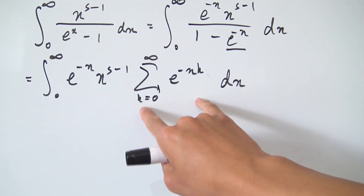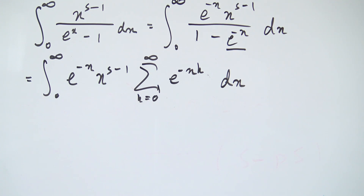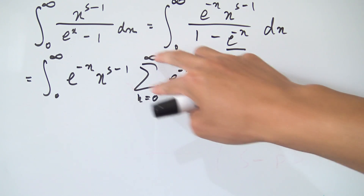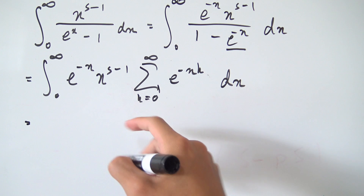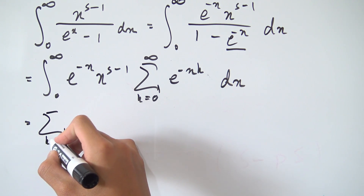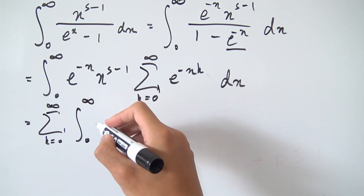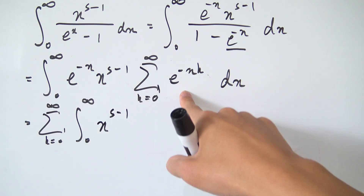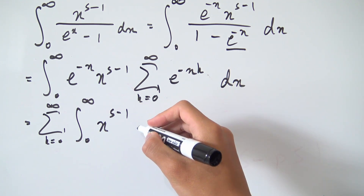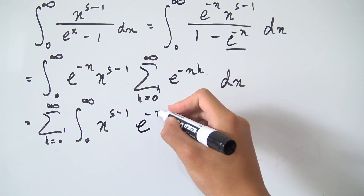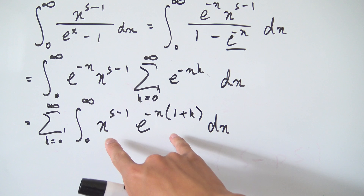Our geometric series converges because e to the minus x is always between negative 1 and 1, so we can pull the sum outside of the integral without any issues interchanging the limits. Pulling the sum out front, we have the sum from k equals 0 to infinity of the integral from 0 to infinity. Combining the two exponential terms, we can factor out negative x to get e to the minus x times 1 plus k.